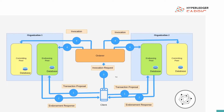In case the client gets only two endorsements but as per the endorsement policy it requires two, and these two endorsements are differing, then it's the client's responsibility to send that same transaction proposal to another endorsing peer as well to get a response. Once the client gets sufficient endorsement responses and the endorsements are matching, then the client sends that transaction invocation to the orderer.